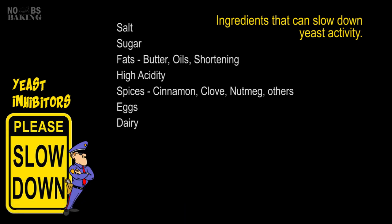Eggs and dairy can inhibit yeast activity; however, usually minor yeast adjustments sort this out when these are used at higher levels. Alcohol, like used in some holiday breads, at high concentrations can slow down or even stop yeast activity. Preservatives like calcium propionate — well, that's a no-brainer — they inhibit yeast activity.